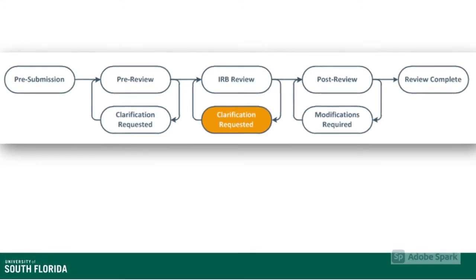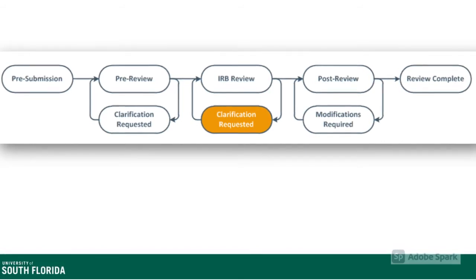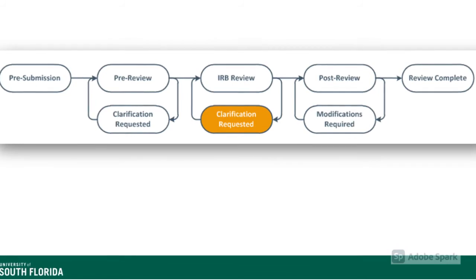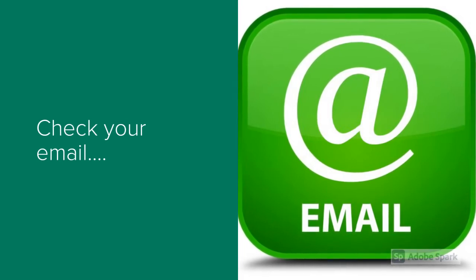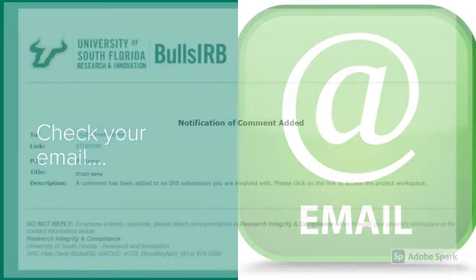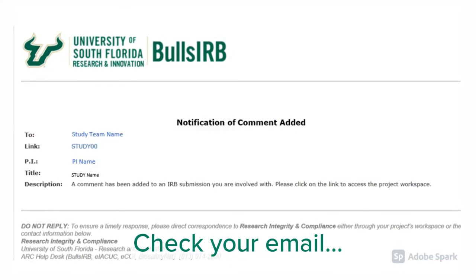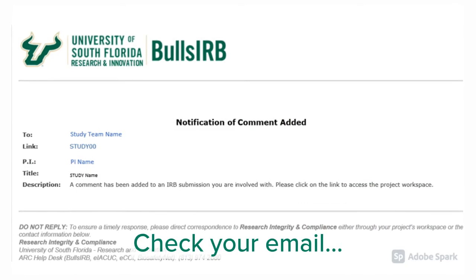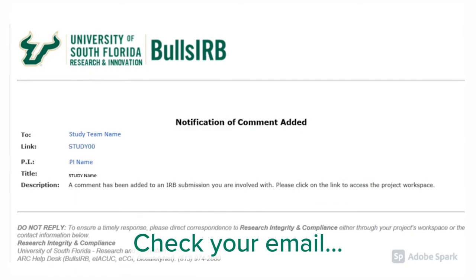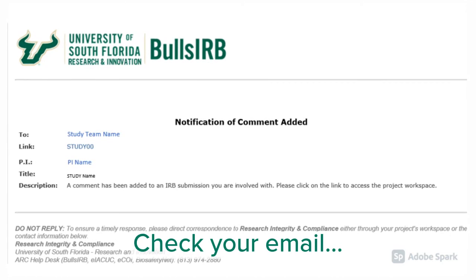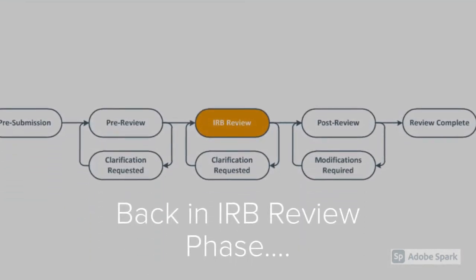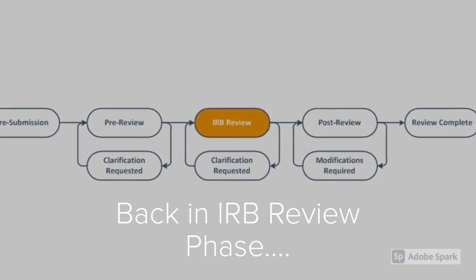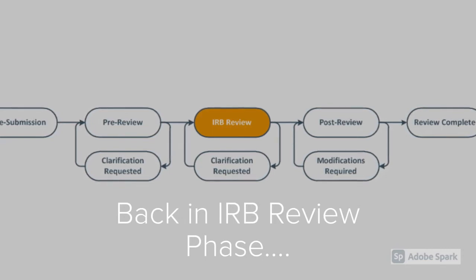If the IRB chairperson has edits, comments, or requests clarifications from you, your study will move to the clarification requested phase under IRB review. Similar to the RCA pre-review, you will receive an email from the Bulls IRB system letting you know that the study team needs to take action on the application. You should click on the link provided in the email to navigate to the study workspace in Bulls IRB. You can review the IRB chairperson's comments in the study history and click into the Bulls IRB application to make any requested changes. After you submit your comments and edits, the study moves back to the IRB review phase and the IRB chairperson reviews your study again to ensure all requested changes have been made.